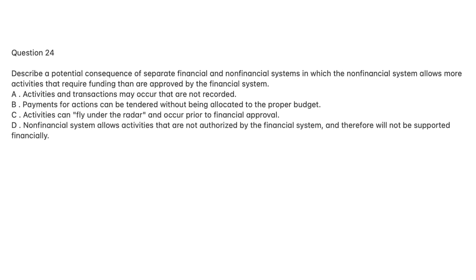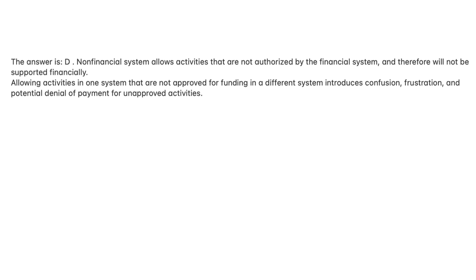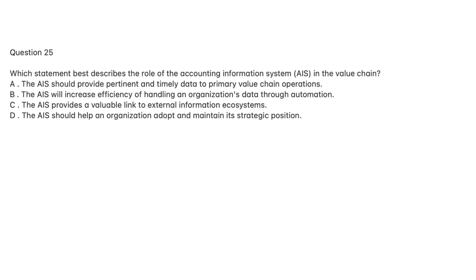Question 24. Describe a potential consequence of separate financial and non-financial systems in which the non-financial system allows more activities that require funding than are approved by the financial system. A. Activities and transactions may occur that are not recorded. B. Payments for actions can be tendered without being allocated to the proper budget. C. Activities can fly under the radar and occur prior to financial approval. D. Non-financial system allows activities that are not authorized by the financial system, and therefore will not be supported financially. The answer is D. Allowing activities in one system that are not approved for funding in a different system introduces confusion, frustration, and potential denial of payment for unapproved activities.